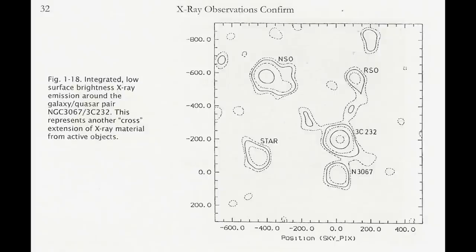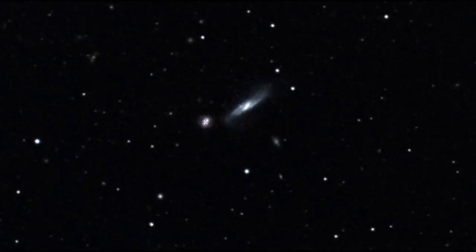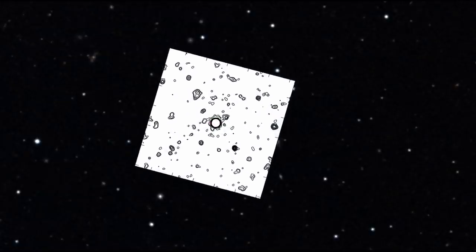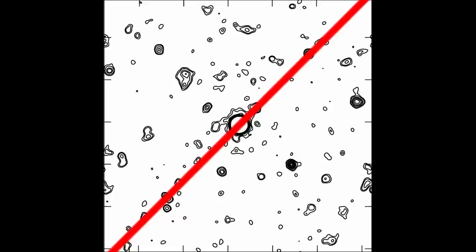I would also argue that the amount of correlations Arp found cannot be ignored. For now it is not important to look at Arp's theory but just the data. We see ejected materials from active galaxies, this material tends to clump and we often find quasars along these paths. We have also seen examples where this same process occurs with quasars itself producing filaments which then produce new radio and X-ray sources.